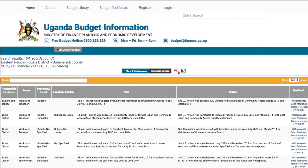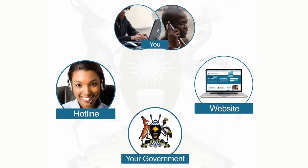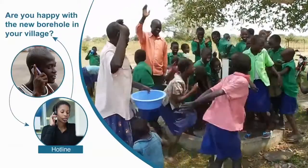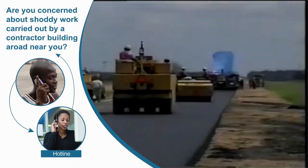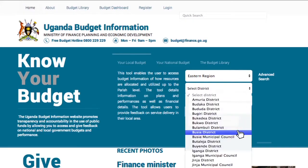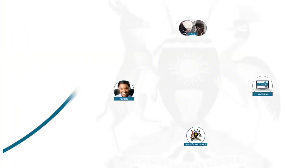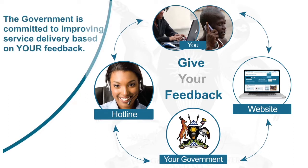How do you give feedback? You can give your views and feedback on how public money is being spent via the free budget outline or via the website. For example, are you happy with a new borehole in your village? Are you concerned about shoddy work carried out by a contractor building a road near you? You can provide feedback anonymously or if you register in your own name. The government aims to respond to this feedback and take necessary follow-up action. The government is committed to improving service delivery based on your feedback.